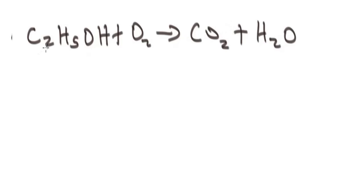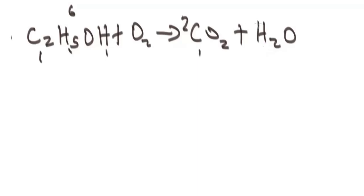Let's begin with the elements at the left. We have how many atoms of carbon here? We have 2 at the left. At the right, we have 1. So we need to balance carbon at the right — that means we put 2 here. Let's balance hydrogen. At the left, we have 6 atoms of hydrogen — this 5 plus the 1 here gives us 6. Whereas at the right, we have 2 atoms of hydrogen, so we need to multiply to make it 6. We now have 6 atoms of hydrogen at the right.